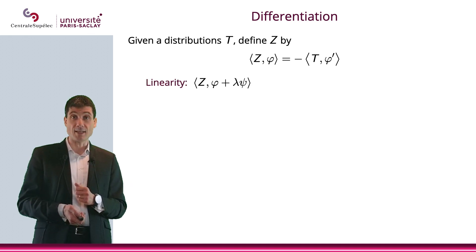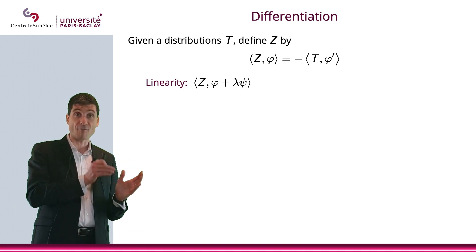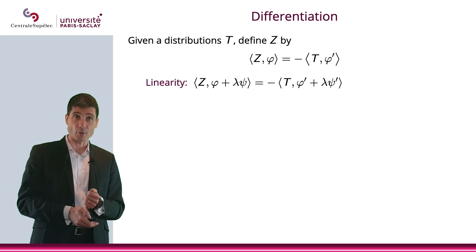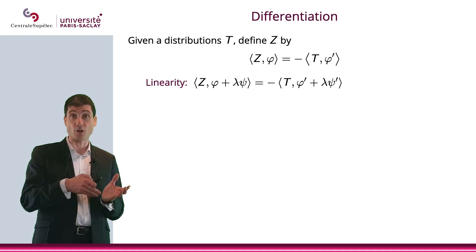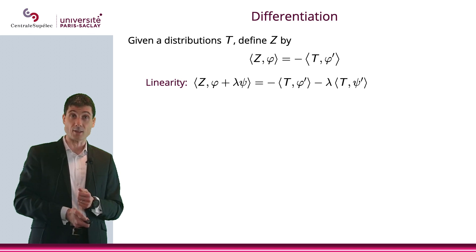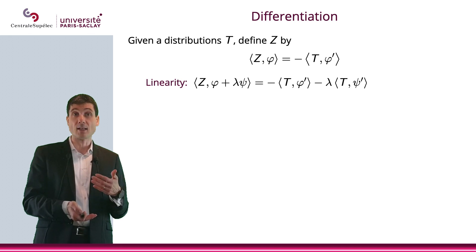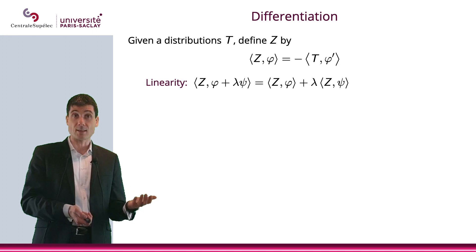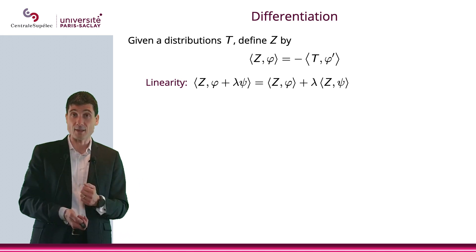Is z linear? The answer is yes. When I apply z to φ + λψ, where φ and ψ are test functions and λ is a real number, that will be, by definition, -t applied to the derivative of φ + λψ, which, thanks to the linearity of t, equals -t(φ') - λt(ψ'), which is z(φ) + λz(ψ). Therefore, we do have linearity.